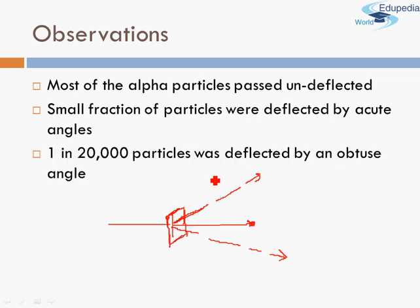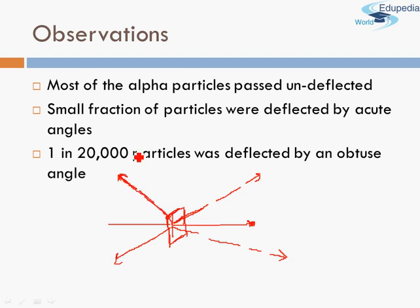Another observation was that one in 20,000 particles was deflected by an obtuse angle — it basically bounced back from the gold foil. To those Alpha Particles, the gold foil acted like a bulletproof vest or some very strong material which could bounce them back. It's like throwing a ball at a wall and the ball comes back and hits you. Since only one in 20,000 was deflected this way, if they had not performed the experiment 20,000 times, there was very low chance they would have observed an Alpha Particle bouncing back.